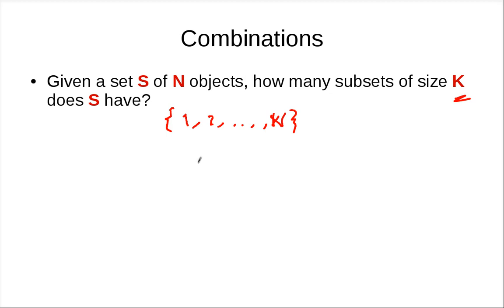So if you count the number of arrangements, you get N times N minus 1 and so on up to N minus K plus 1. And this again overcounts the number of subsets, right? Because one subset can appear many times, so you have to divide this by the overcount number of times.